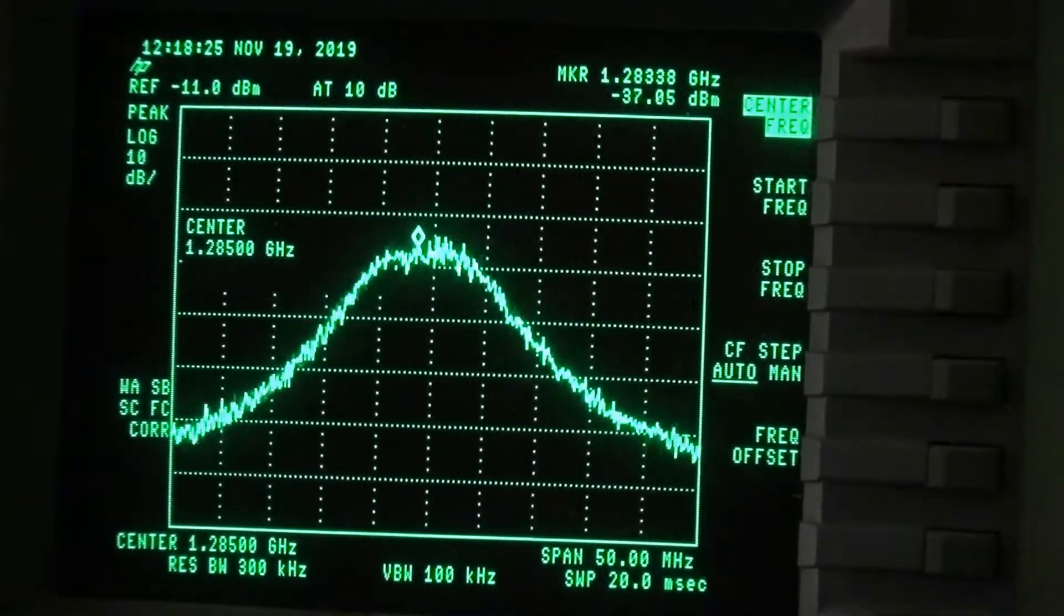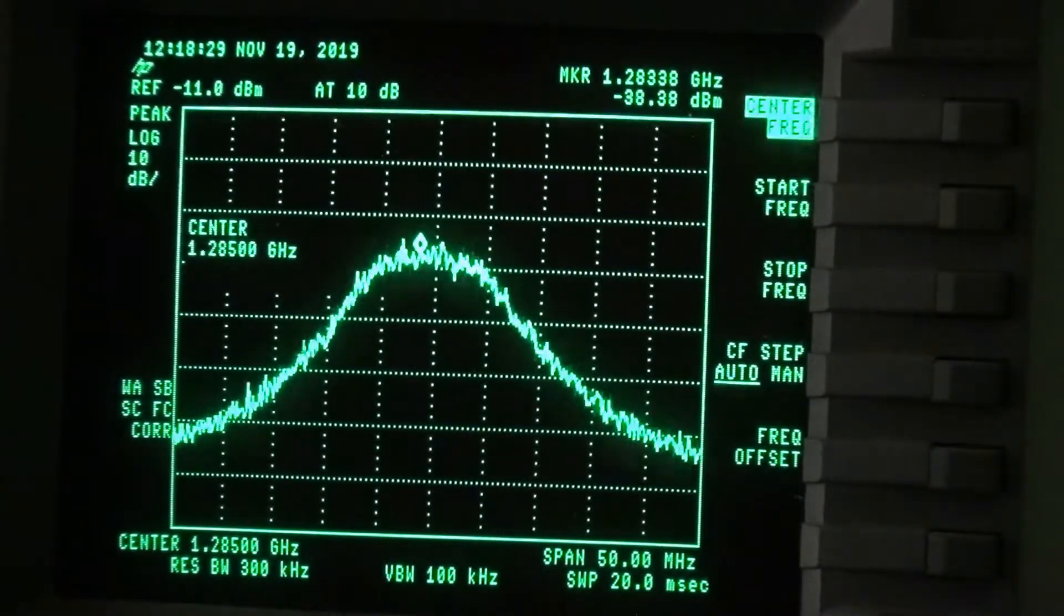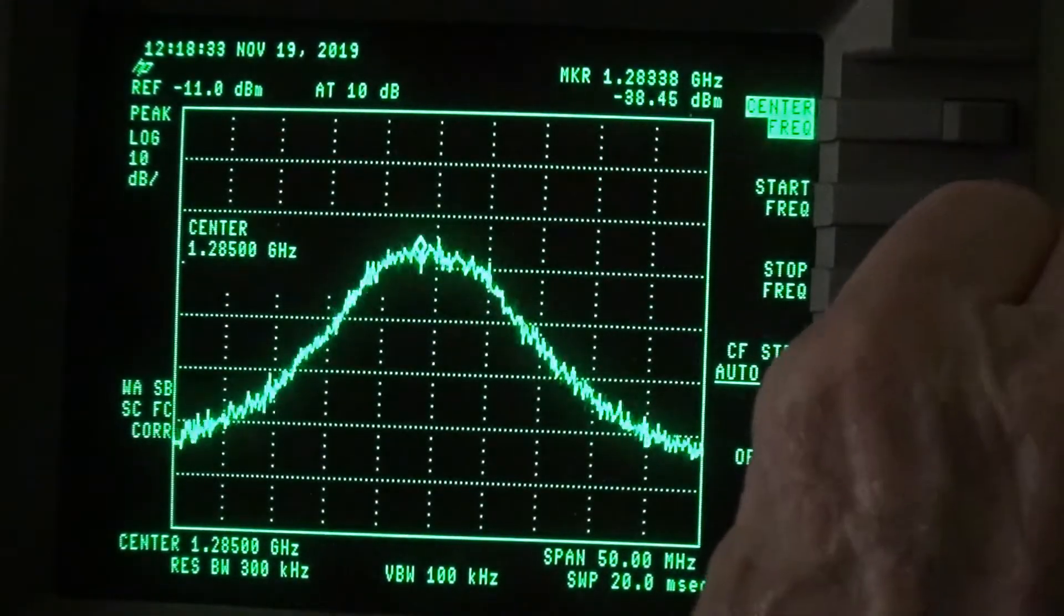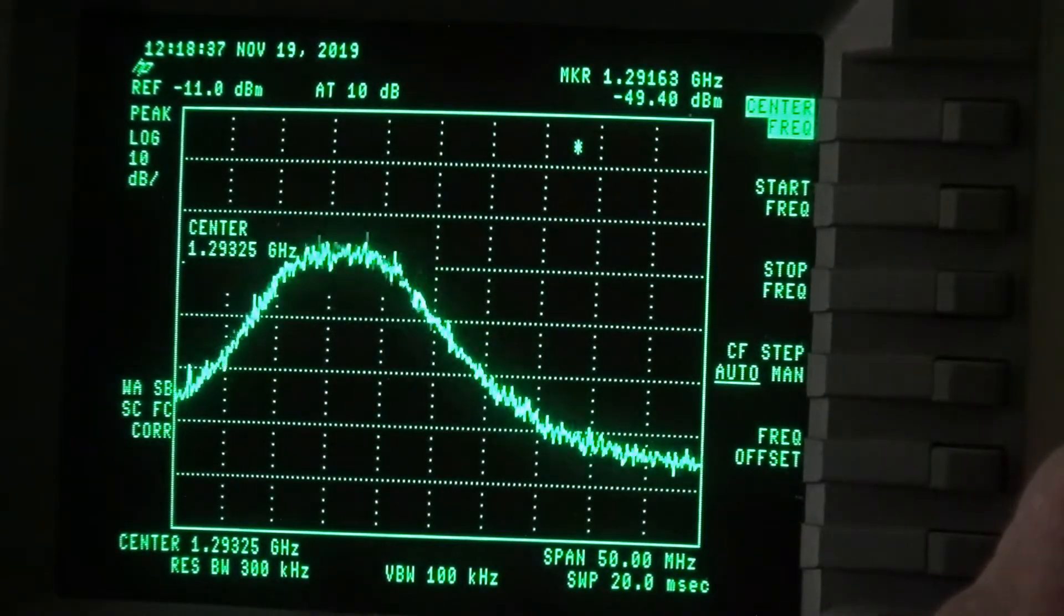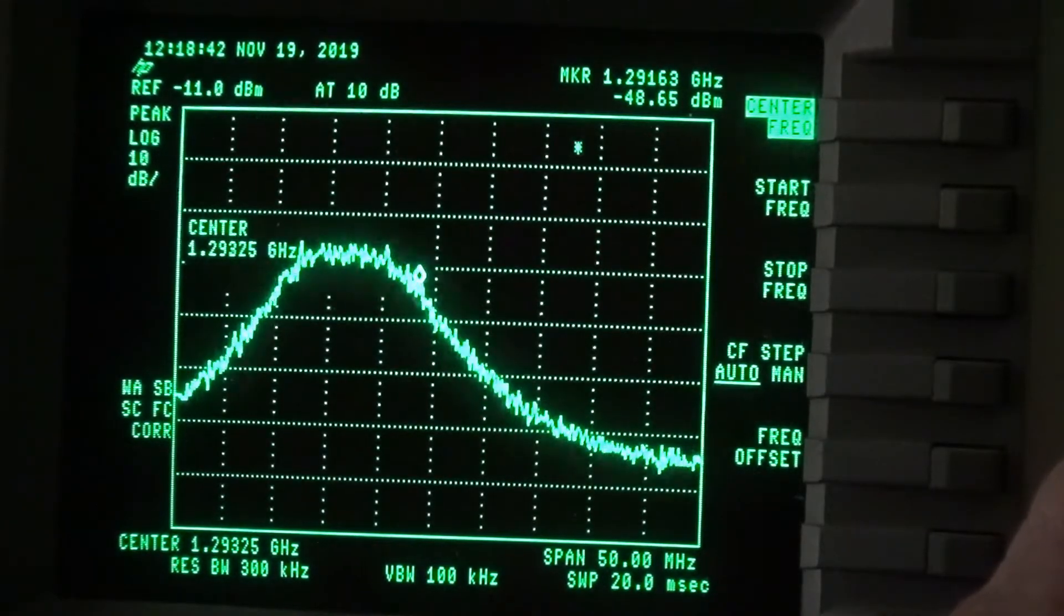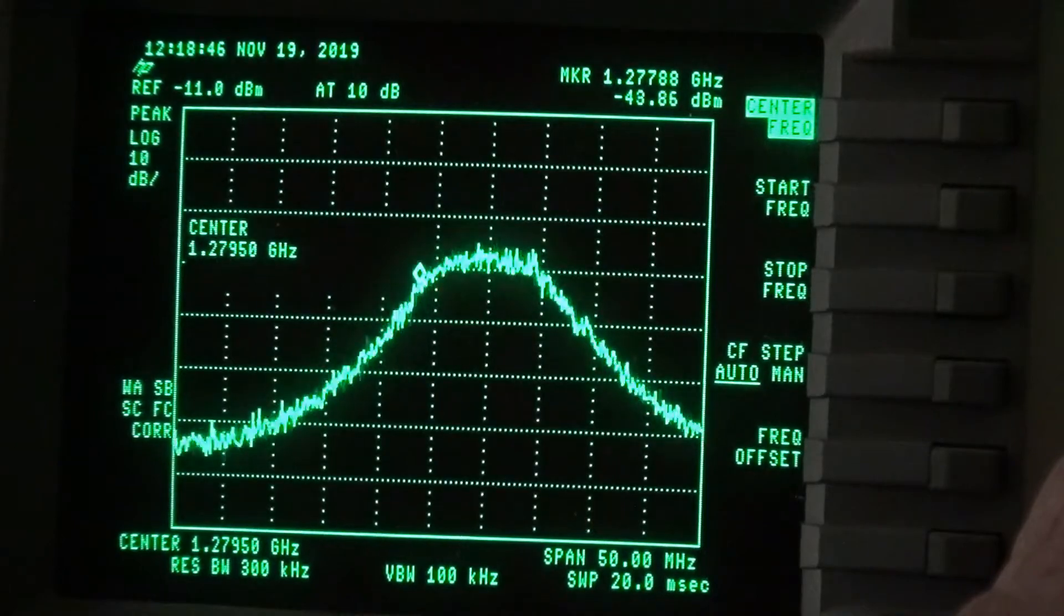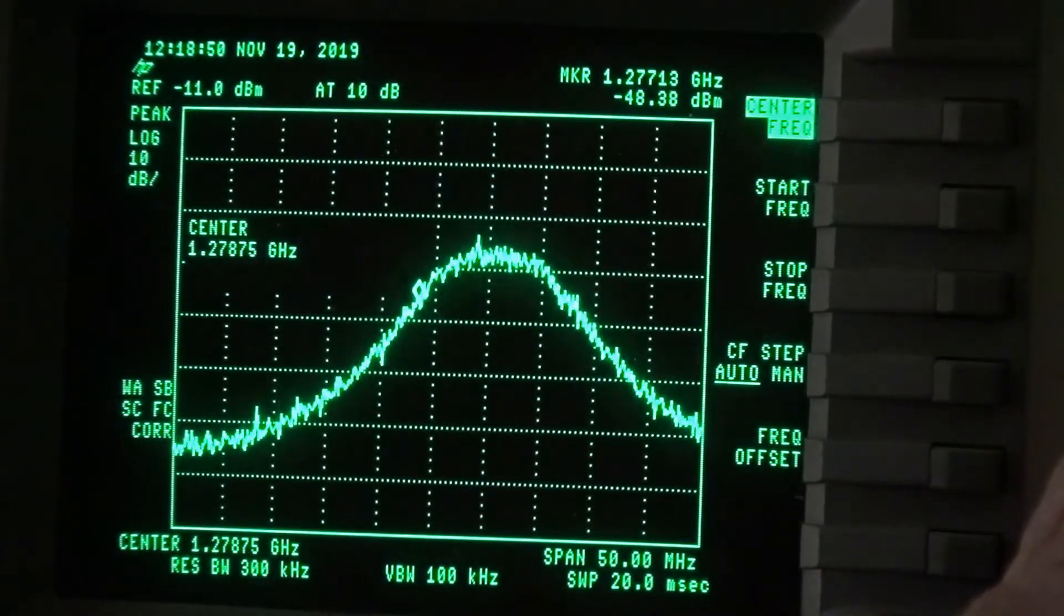There's the final setting. We're on 1285 megs and 50 meg band spread. You can see it's good to about - it starts to drop off about 1292, not 1293. And the other side around about 1280, 1279.